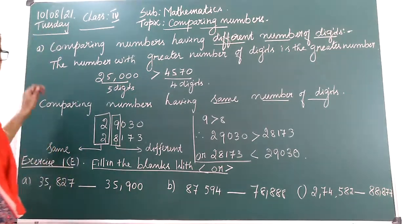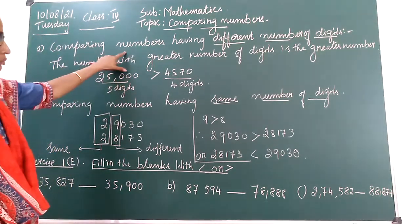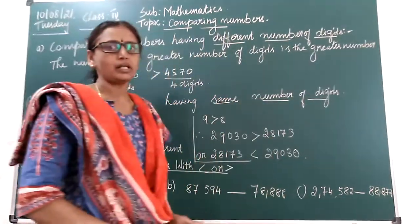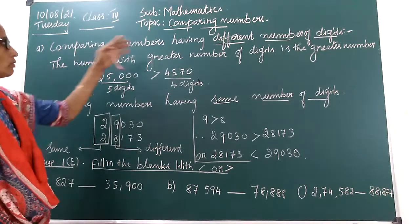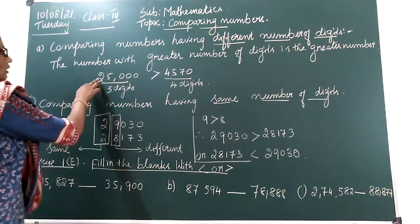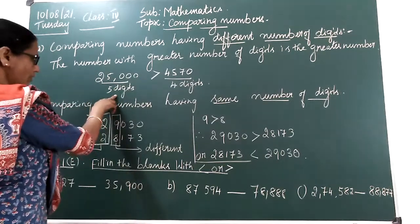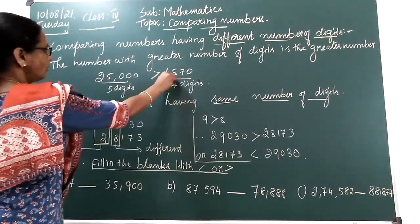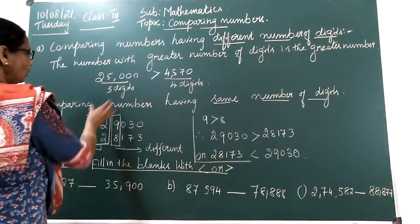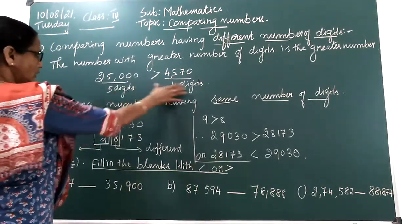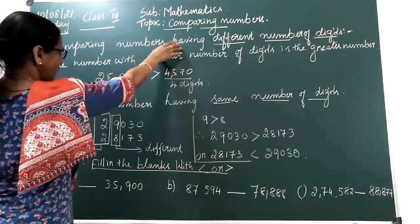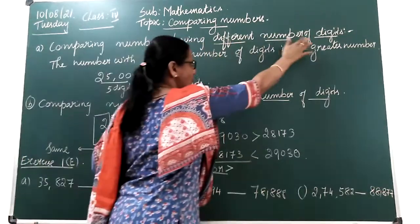First tip: comparing numbers having different number of digits. Look at the number here. The number 25,000 has 5 digits. This number 4,570 has 4 digits. So, this number has 5 digits and this number has 4 digits. We are going to compare numbers having a different number of digits.